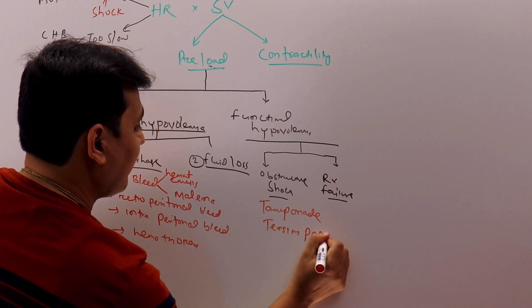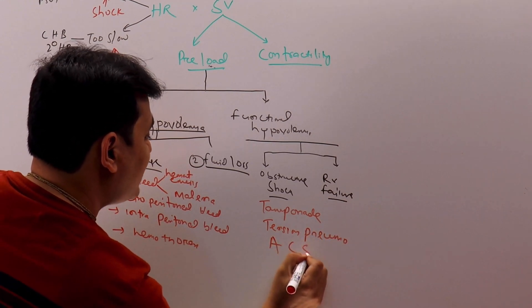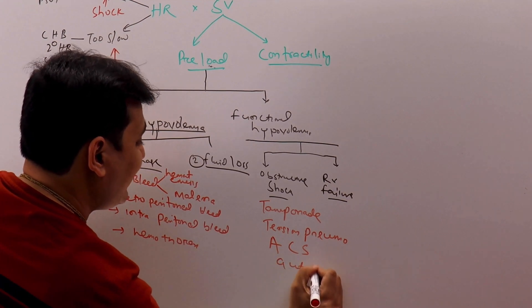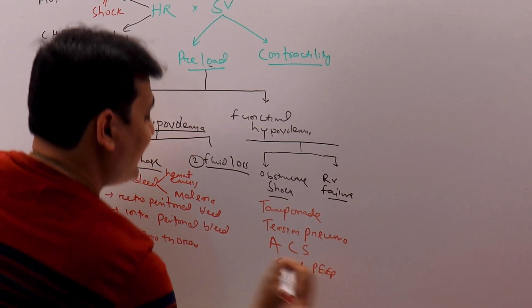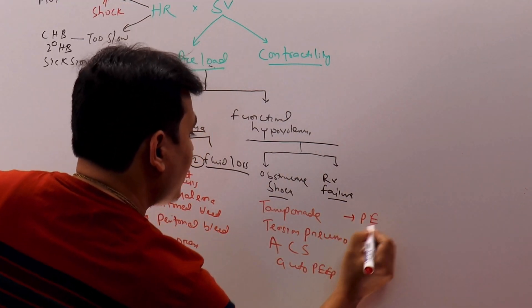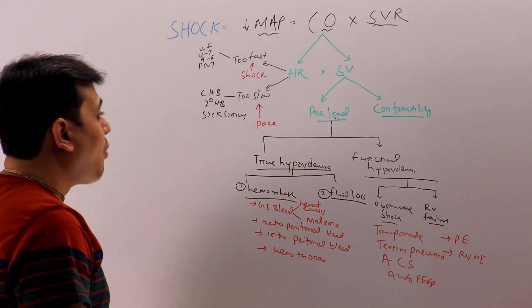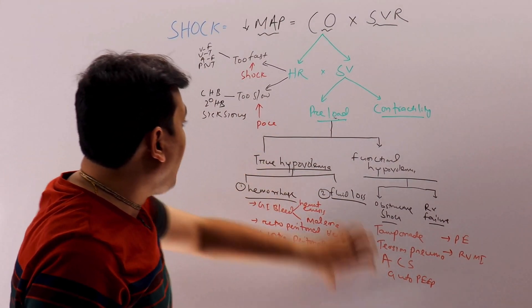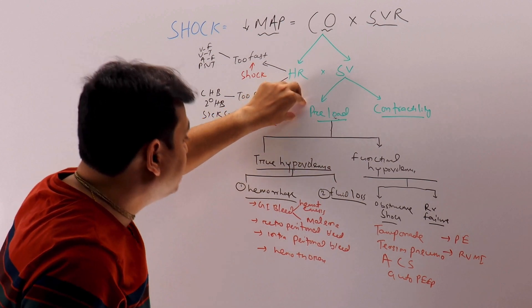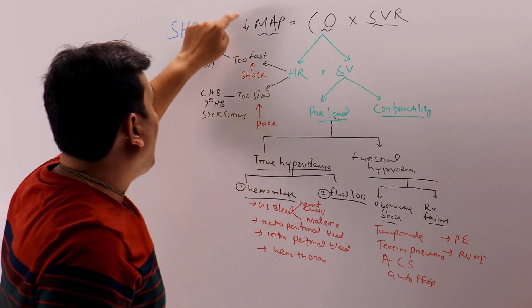We have abdominal compartment syndrome, we have auto PEEP generation. In RV failure we can have pulmonary embolism or right ventricular myocardial infarction. So why are both of these clubbed together under preload? Because in any of these cases, if you give preload in the beginning, the BP will go up. They will be responsive to fluid.